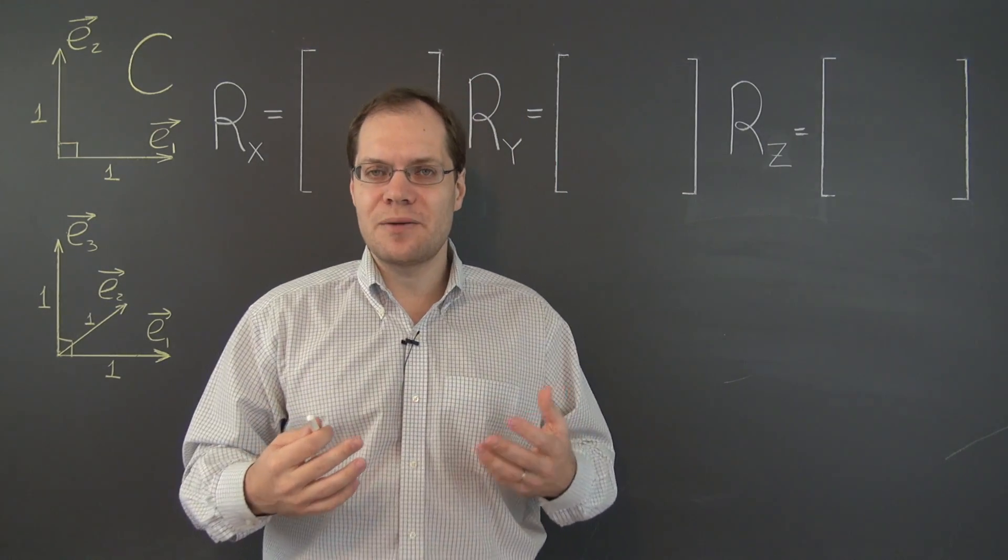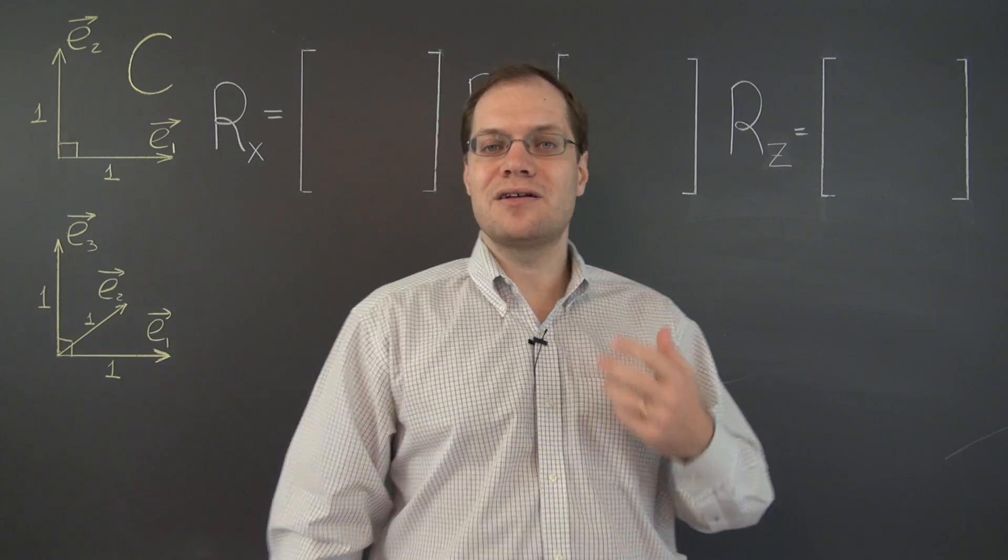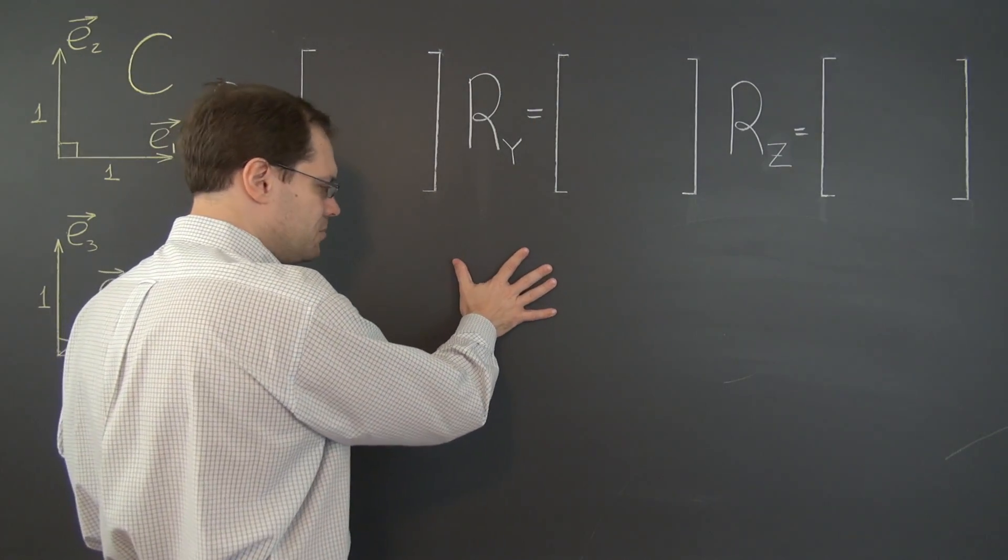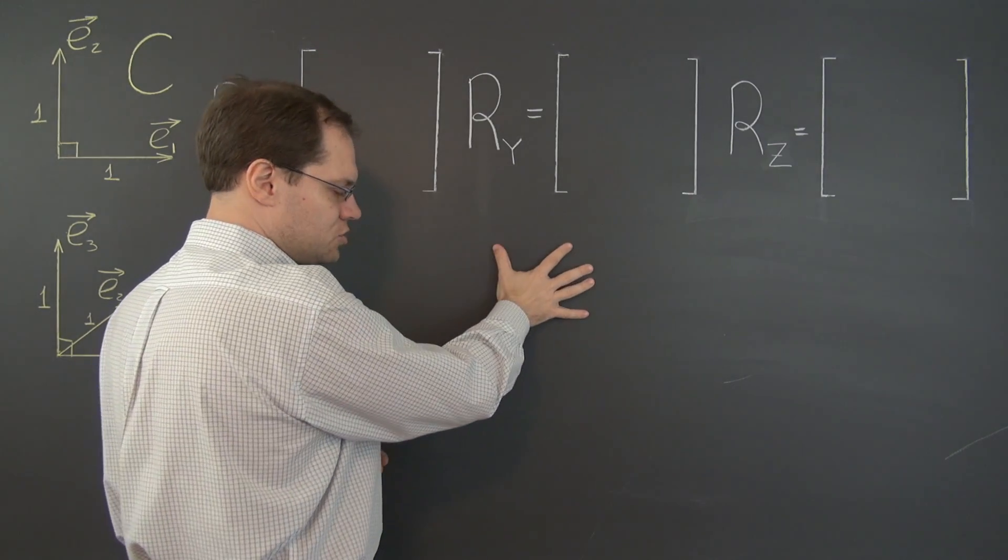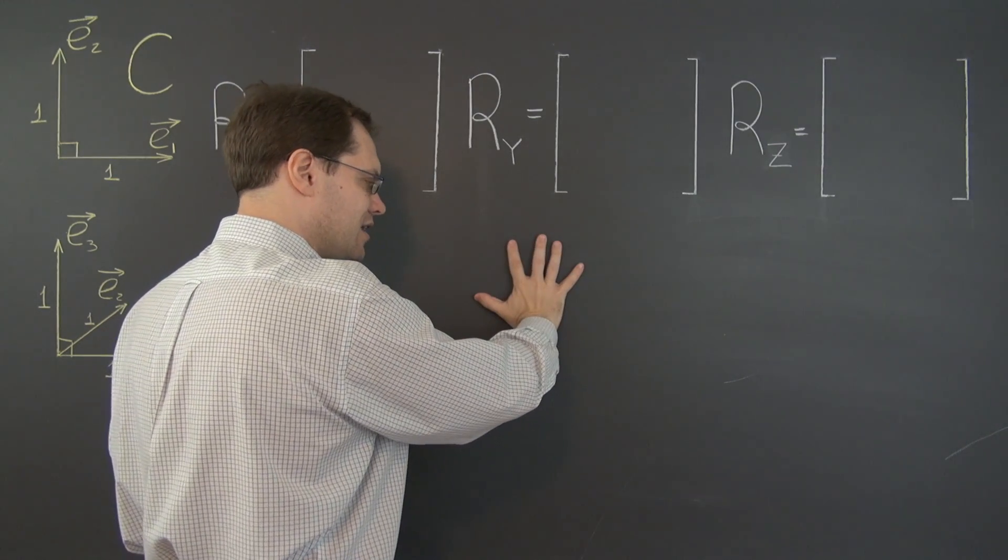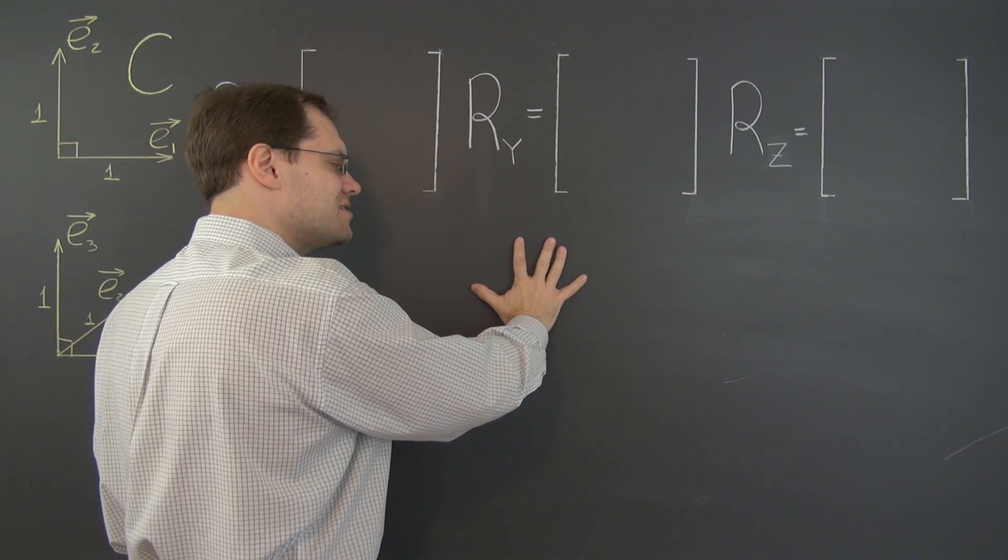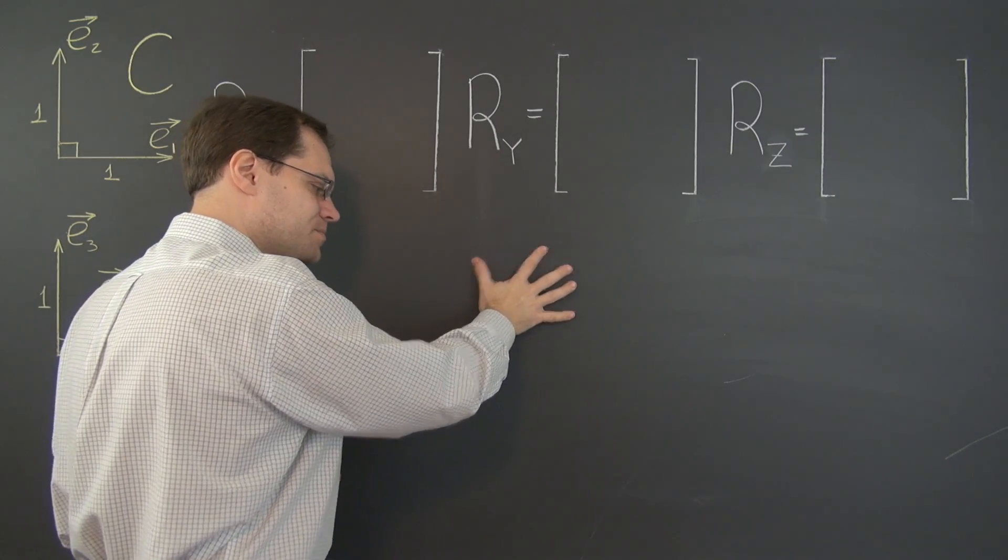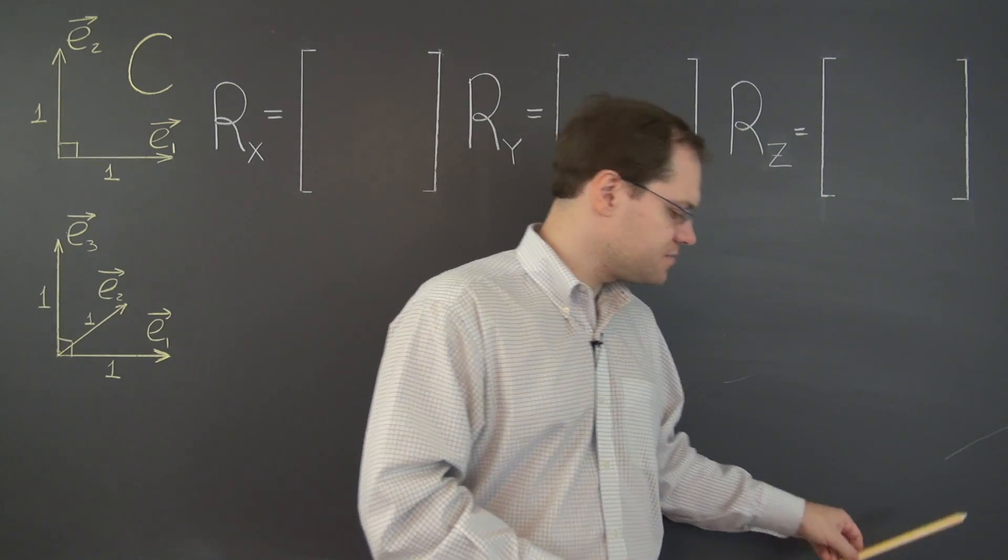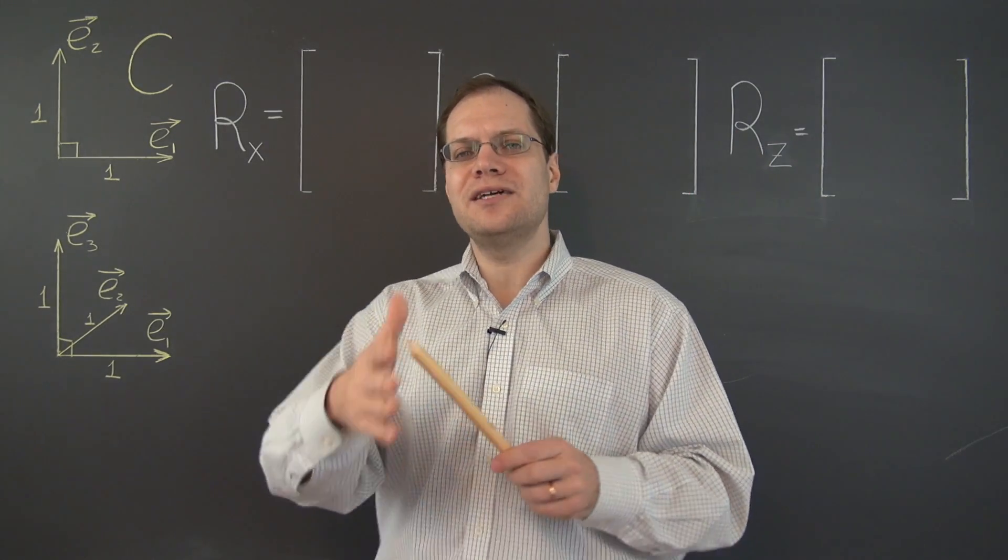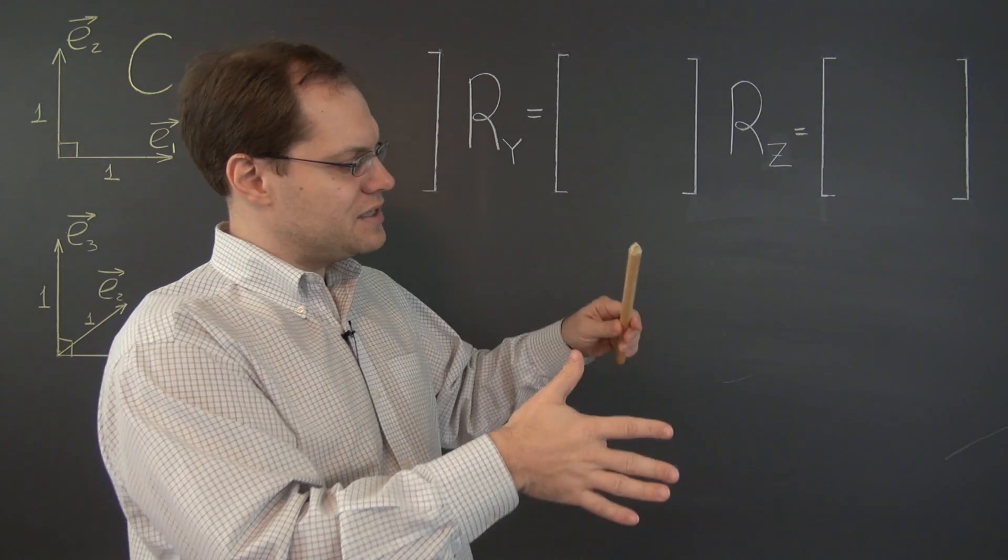Now we also need to talk about what counterclockwise means. Counterclockwise had a very clear meaning in the plane. It's completely, or almost completely, uncontroversial. This is the counterclockwise rotation, and this is the clockwise rotation. But when you're talking about an axis in three dimensions, what does counterclockwise mean?